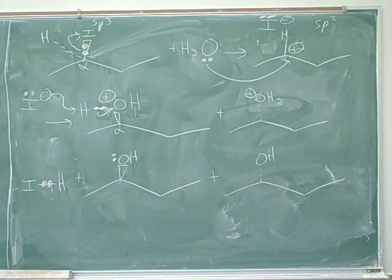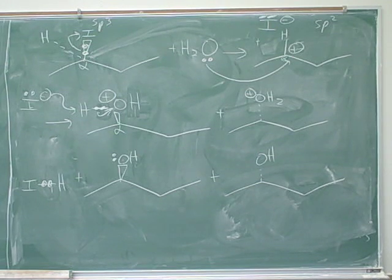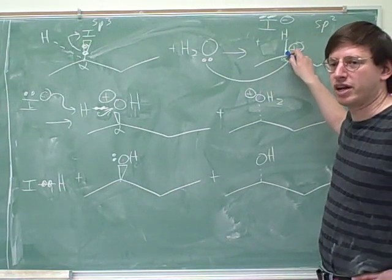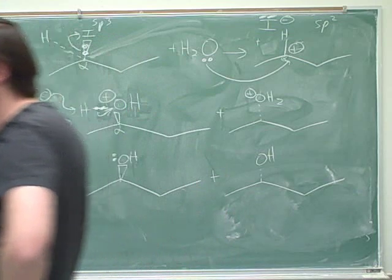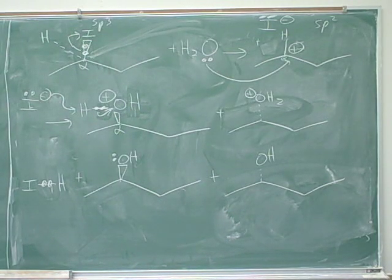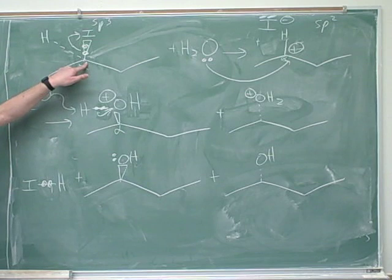Let's look at the handout — page one, the row on stereochemistry. SN2 gives you inversion. Why? Because there's a backside attack since the leaving group blocks the front side, and that means you only get one inverted product. SN1 gives racemization because you have a carbocation intermediate — specifically a trigonal planar carbocation intermediate. The real reason we get two different products racemically is because we're attacking a trigonal planar carbocation intermediate. That's one of the many patterns you're expected to know for SN1 and SN2.